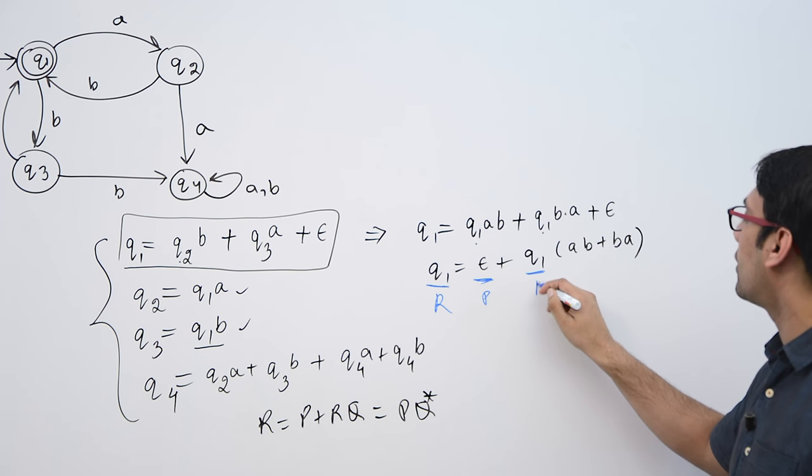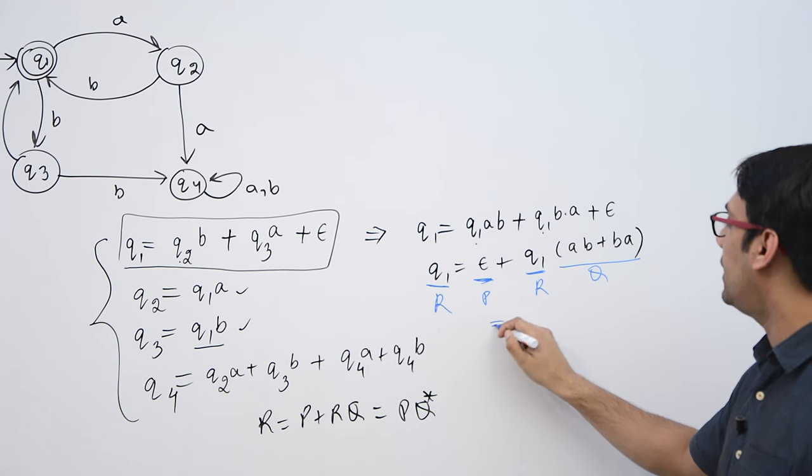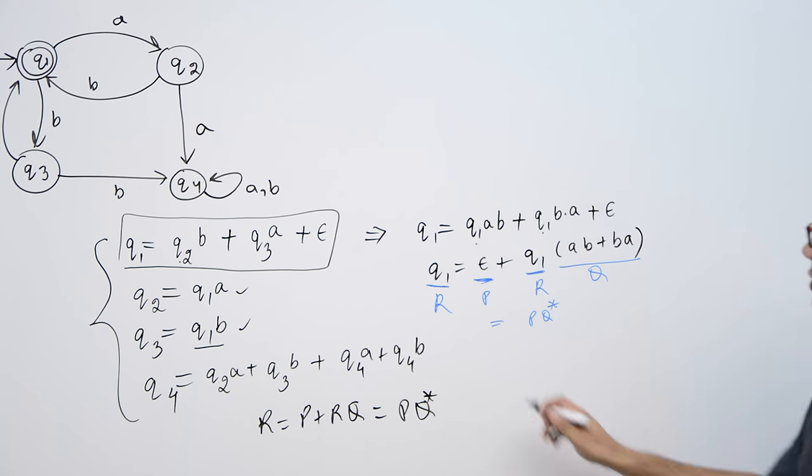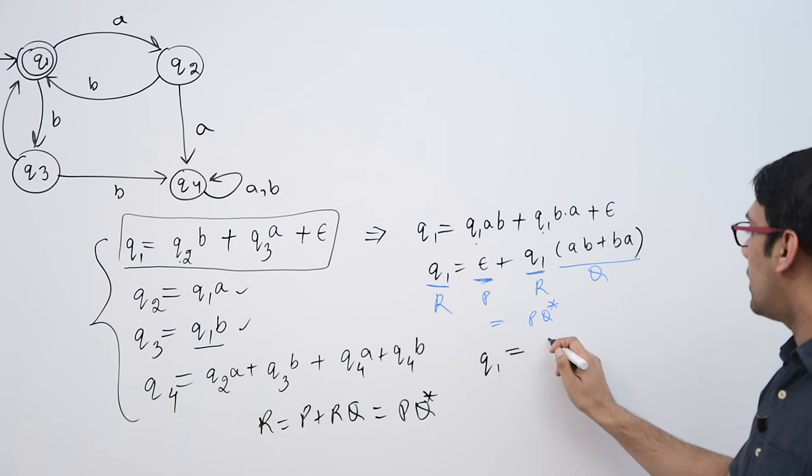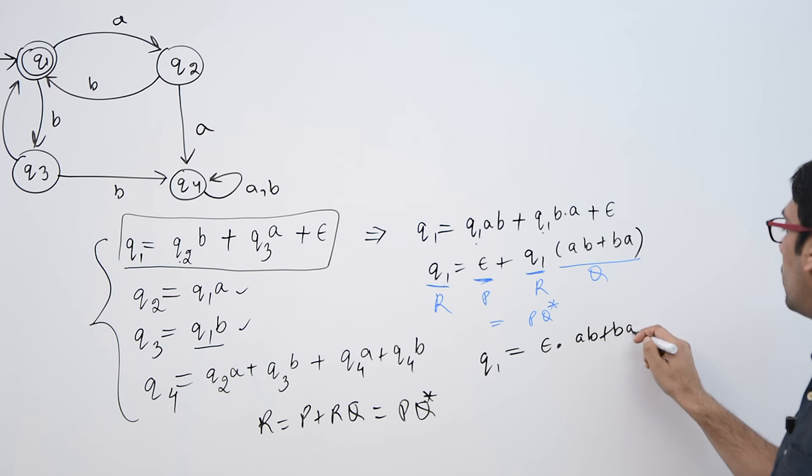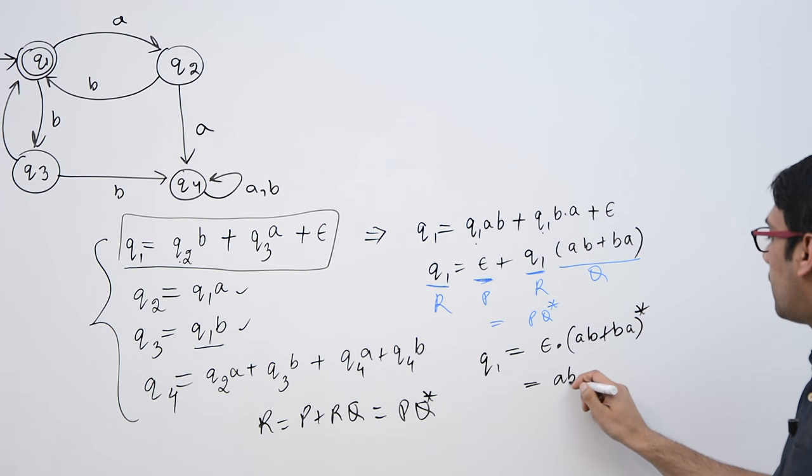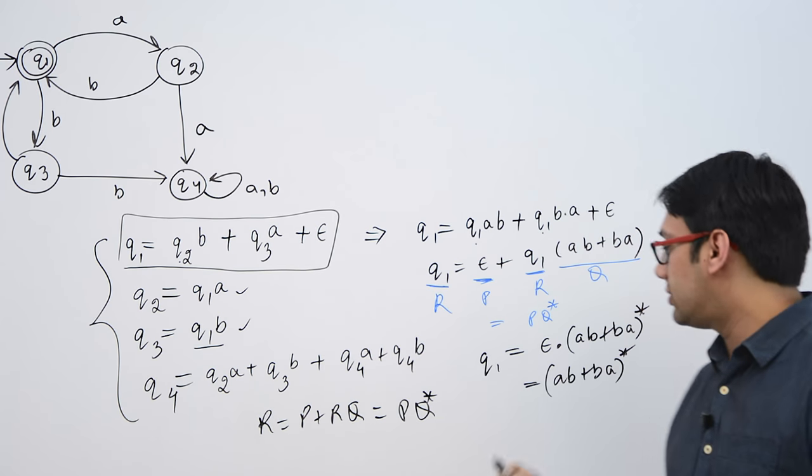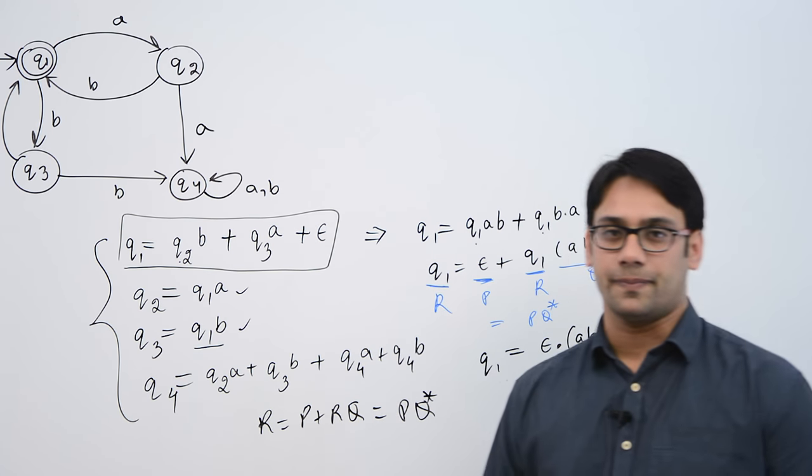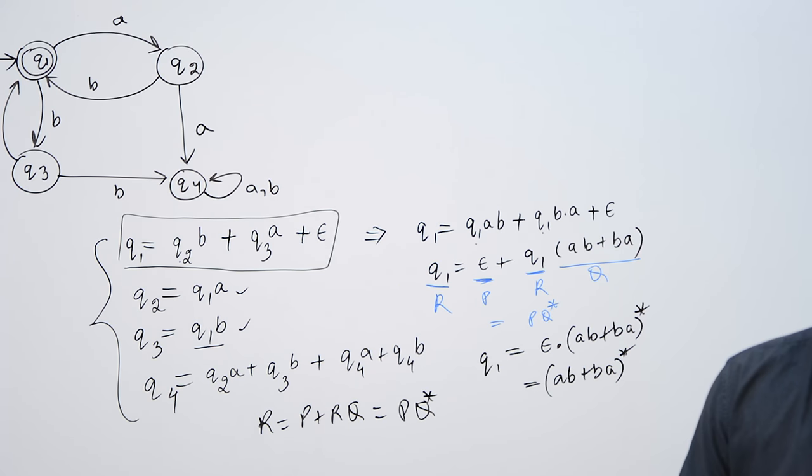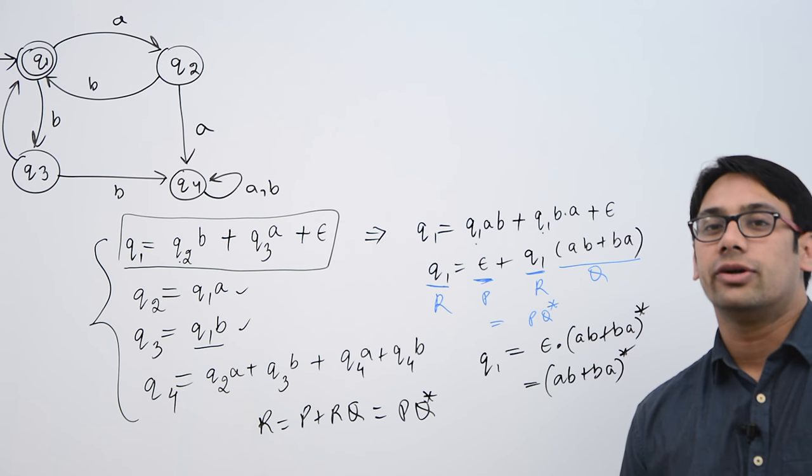This is r and this is q, so this complete can be written as pq star. So we can see q1 can be written as epsilon dot q star, that is (ab plus ba) whole star, which is again equivalent to only (ab plus ba) whole star. Therefore I have represented the complete diagram just by using this simple regular expression. Okay let us take few more examples and let us try to solve those examples to get regular expressions for those finite automatas.